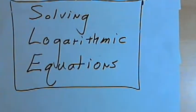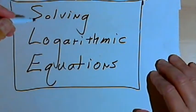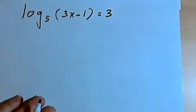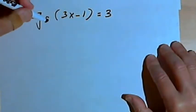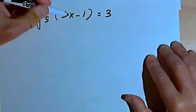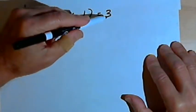This video is provided as supplementary material for courses taught at Howard Community College. In this video I'm going to talk about solving logarithmic equations. So here's our first equation. This says the log base 5 of 3x minus 1 equals 3.